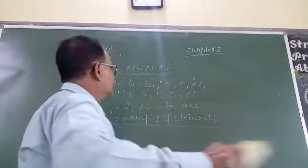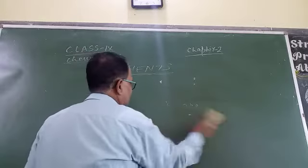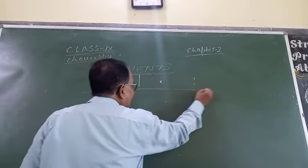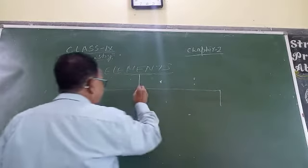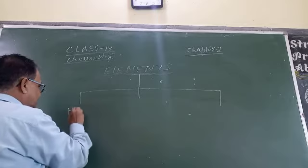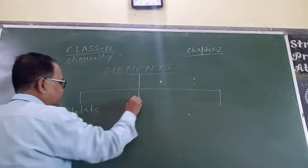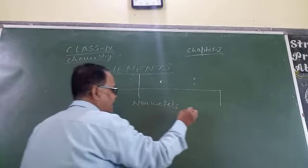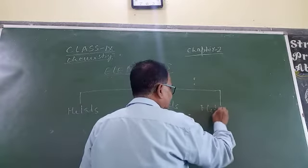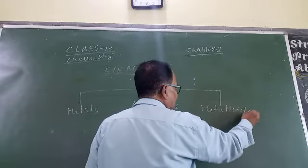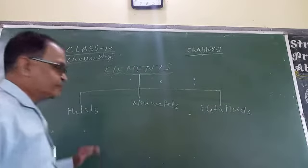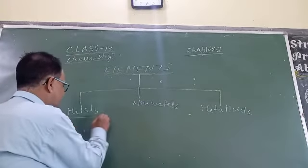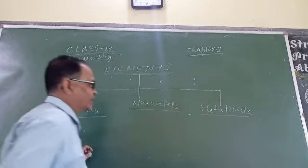Elements are divided into three types: metals, non-metals, and metalloids. On the basis of some specific properties, elements can be classified into metal, non-metal, and metalloids.